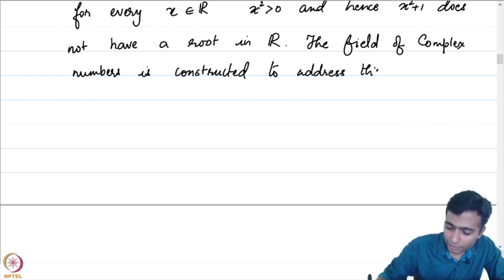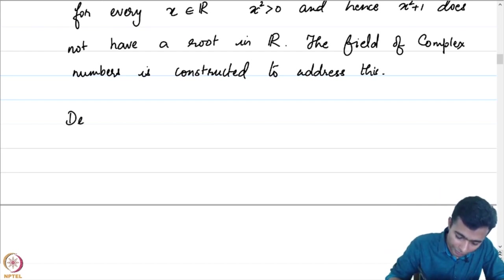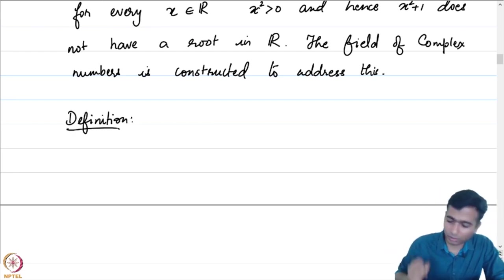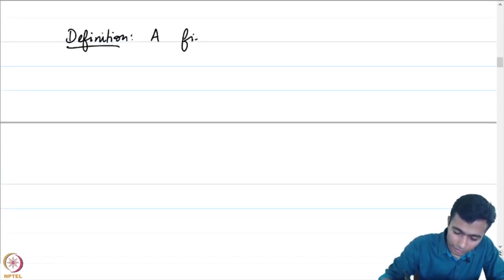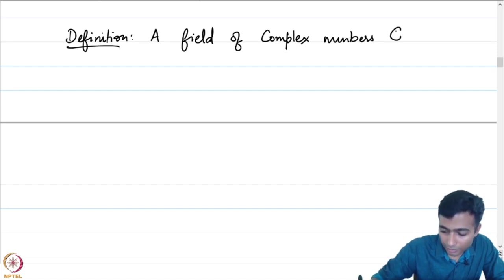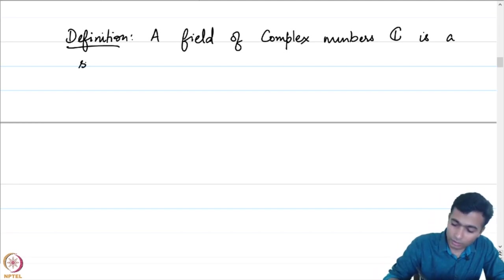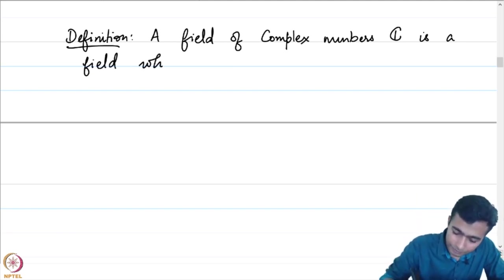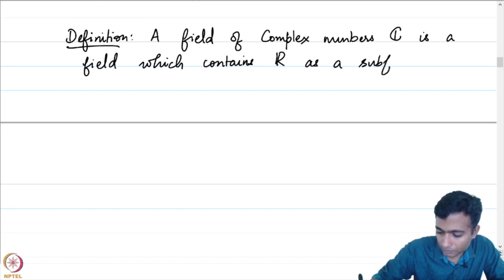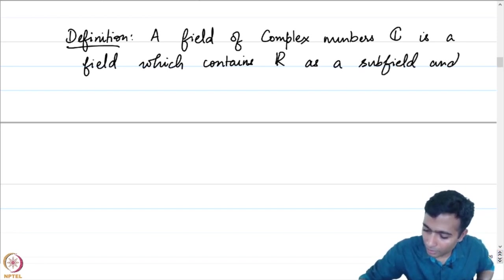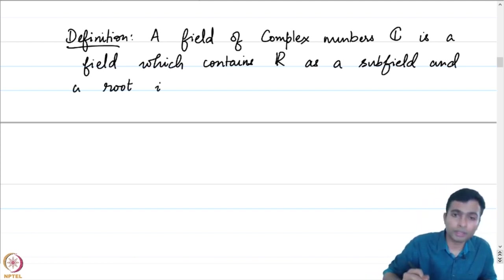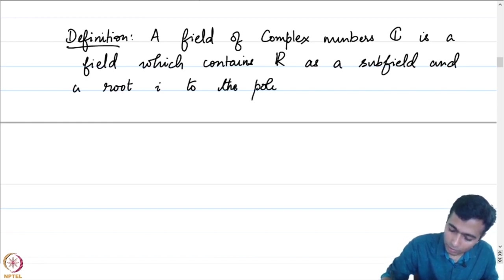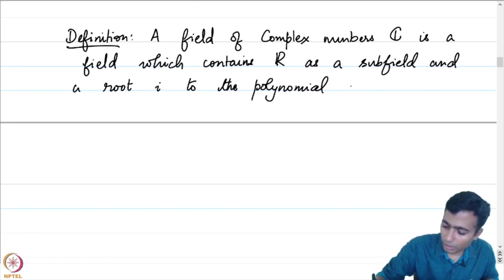Let us give a definition of the field of complex numbers. Definition: A field of complex numbers C is a field which contains R as a subfield and a root i of the polynomial x squared plus 1.